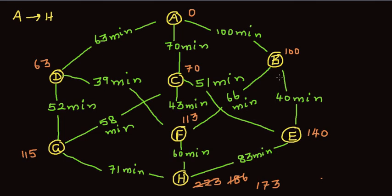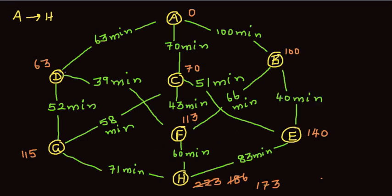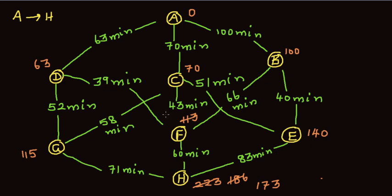What if we go from B to F? That's 100 plus 66, which is 116 — not a good approach. What about D to F? That's 63 plus 39 — let's use the calculator: 63 plus 39 equals 102. That is better! So it is better to go from D to F rather than C to F. A to D is 63, and 63 plus 39 is 102.